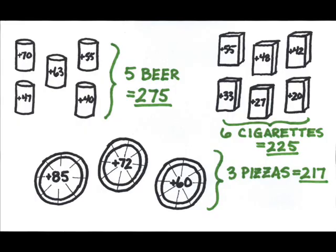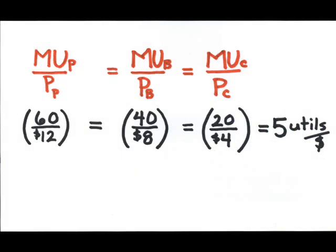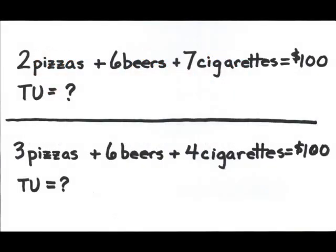This consumer has achieved consumer equilibrium, where the marginal utility per last dollar spent for each good is equal. No other combination gives greater utility. Just to prove this to yourself, you could spend your $100 in either of the following ways, but what would your total utility be?